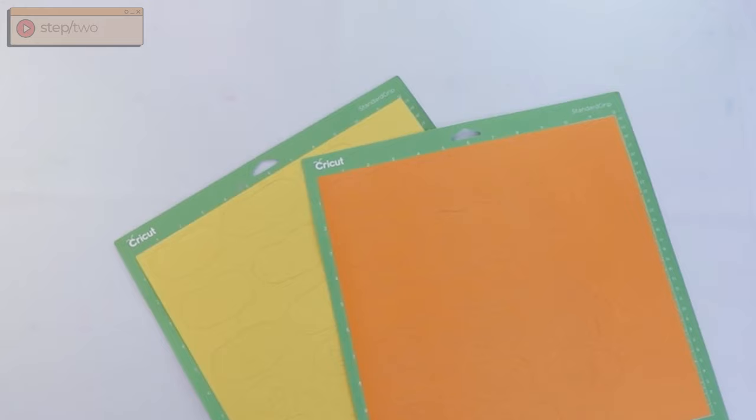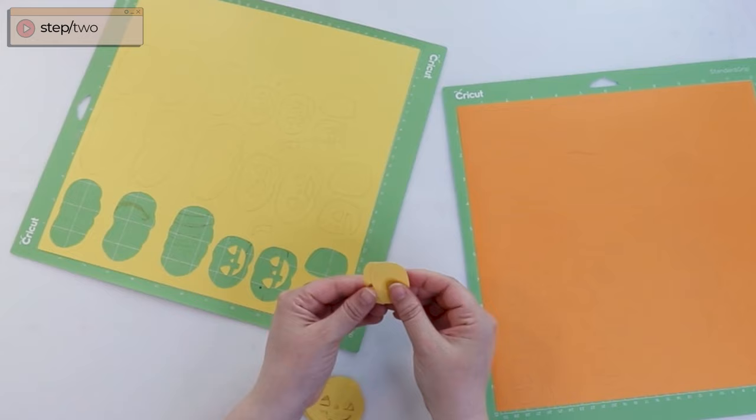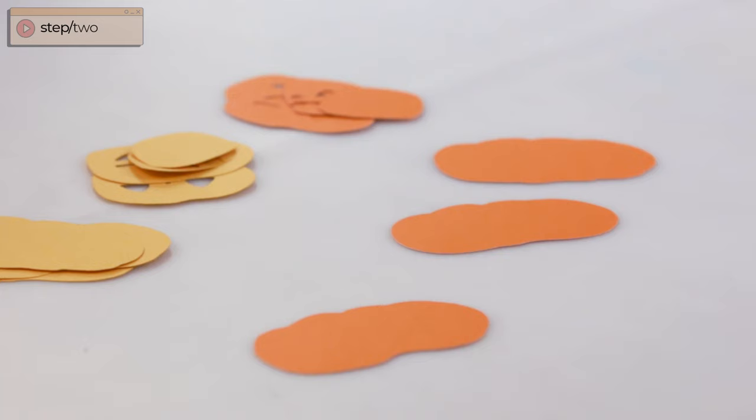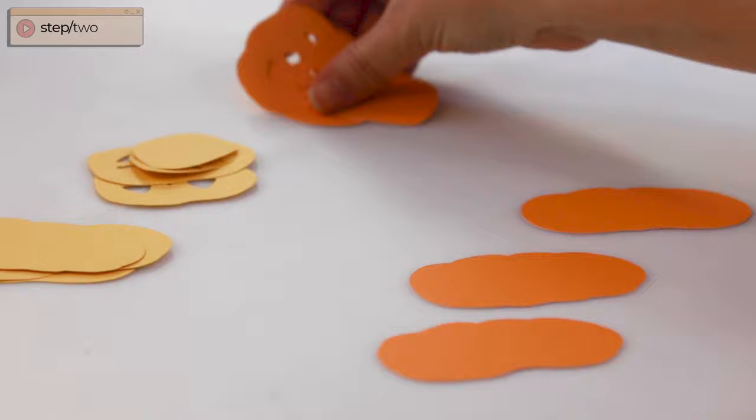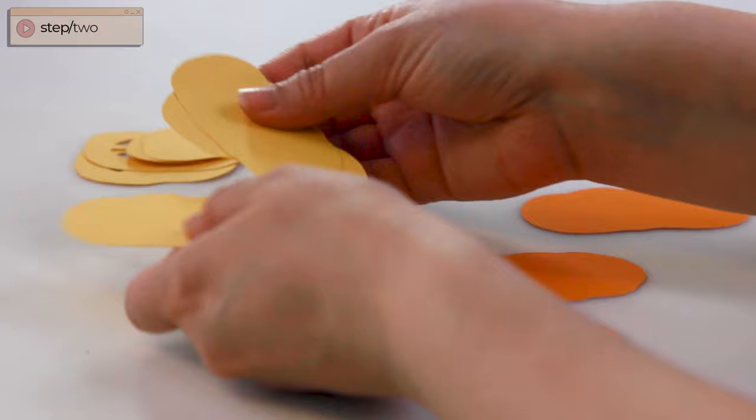Once you have your die cuts cut, I recommend placing them in a pile in front of you with the three larger sections in one pile and then the face sections in another. If you have problems removing your die cuts from your mat, I recommend slightly curling the mat and encouraging the materials to basically pop off on their own.